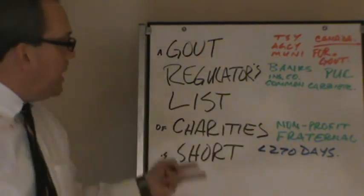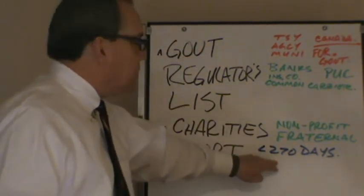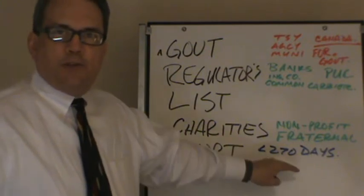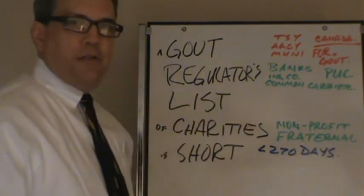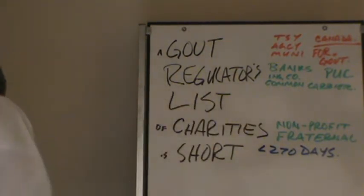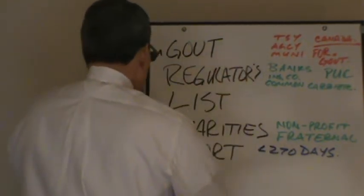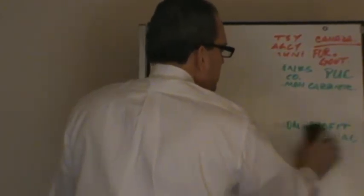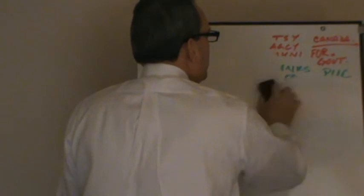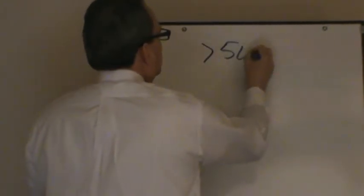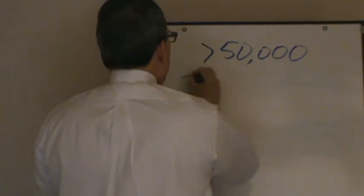You do have a little twist on the commercial paper. Let's knock that out real quick because there's a pretty easy way to remember it — just some cheesy little stories and associations. Basically, what we've got is that you have to have $50,000 or more face value — greater than $50,000.